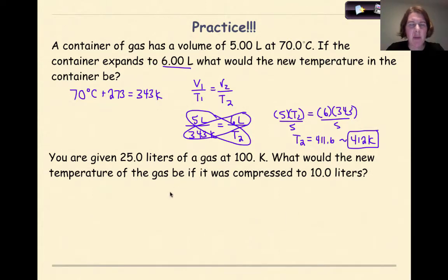Let's go ahead and look at our final practice problem. You were given 25 liters of a gas at 100 Kelvin. What would the new temperature of the gas be if it was compressed to 10 liters? So the first thing that I'm going to do is write out my formula. V1 over T1 equals V2 over T2. My initial volume is 25 liters. My initial temperature is 100 Kelvin. My final volume is 10 liters because we are compressing it. And I am solving for my final temperature.